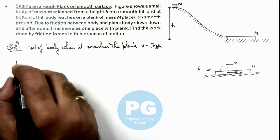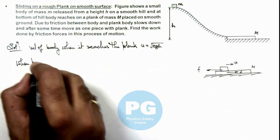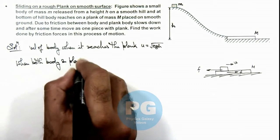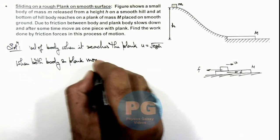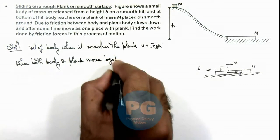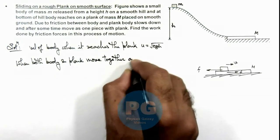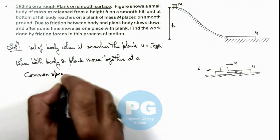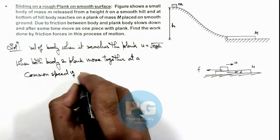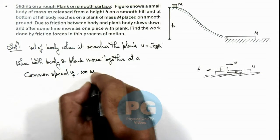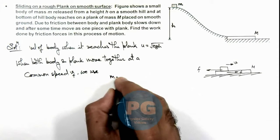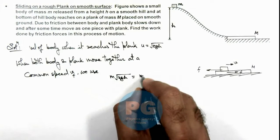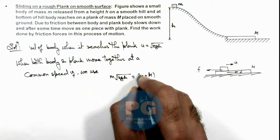So we can say when both body and plank move together at a common speed v final, then we use the initial momentum of body was m times root 2gh and finally it will be moving with momentum m plus M times v final.